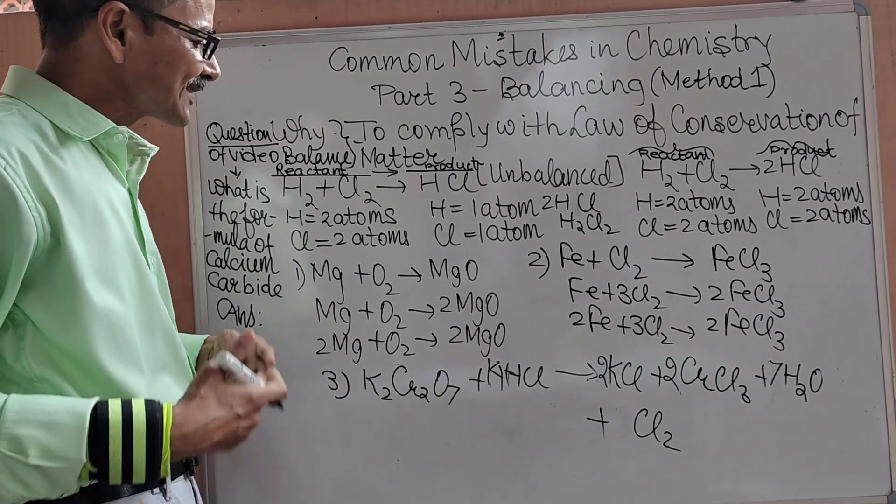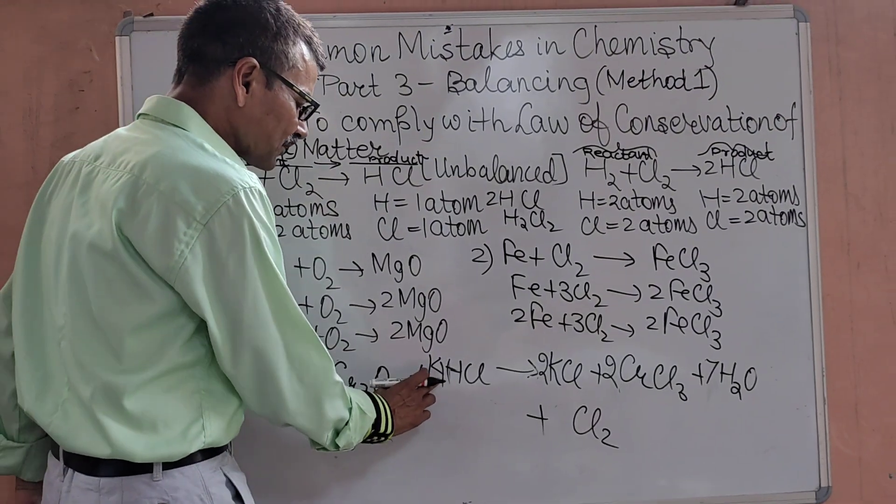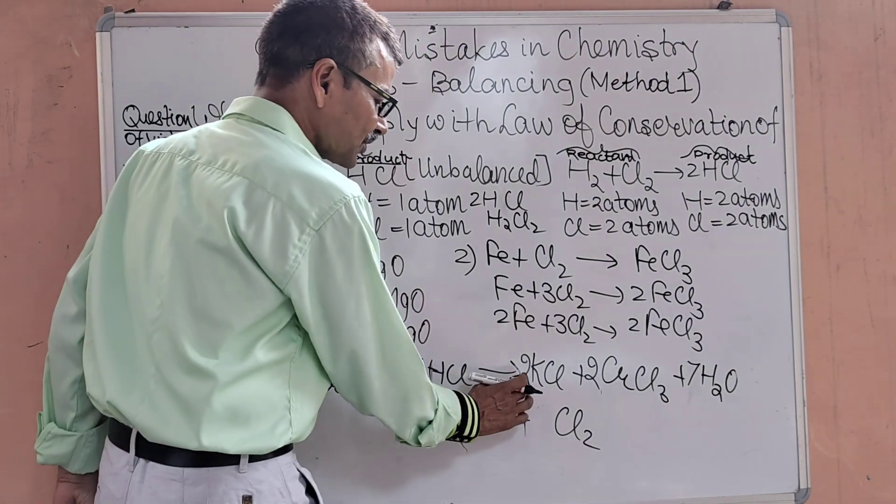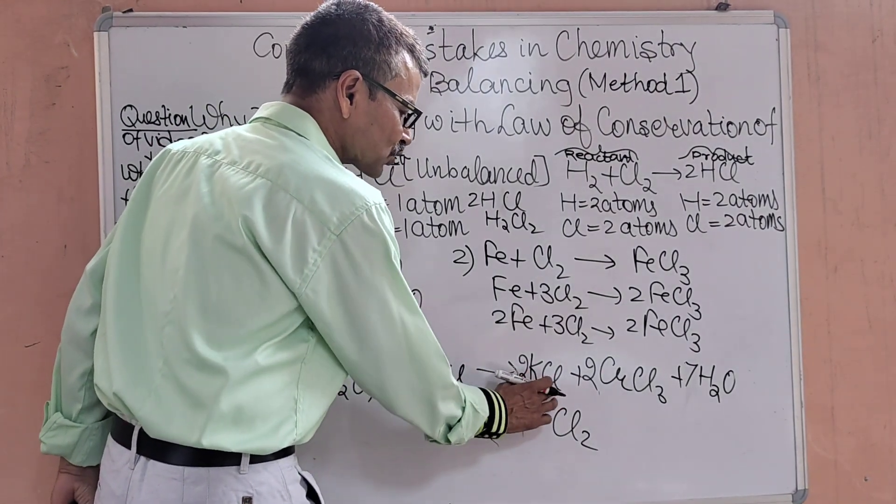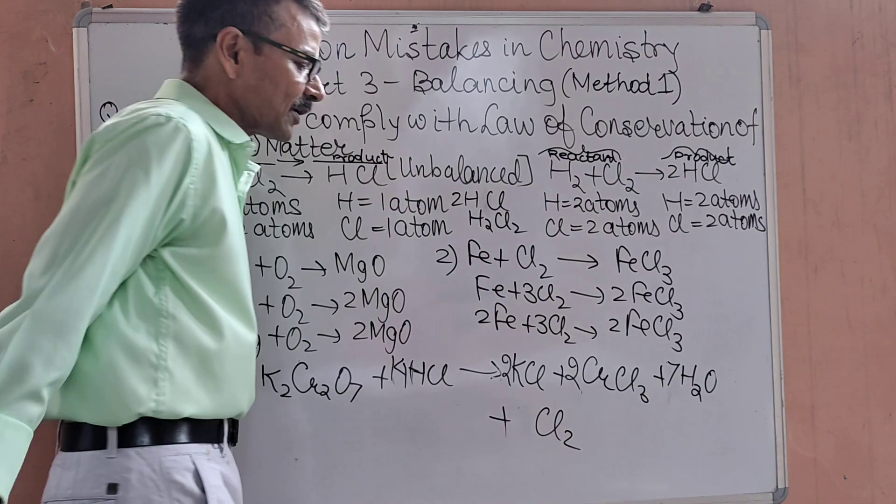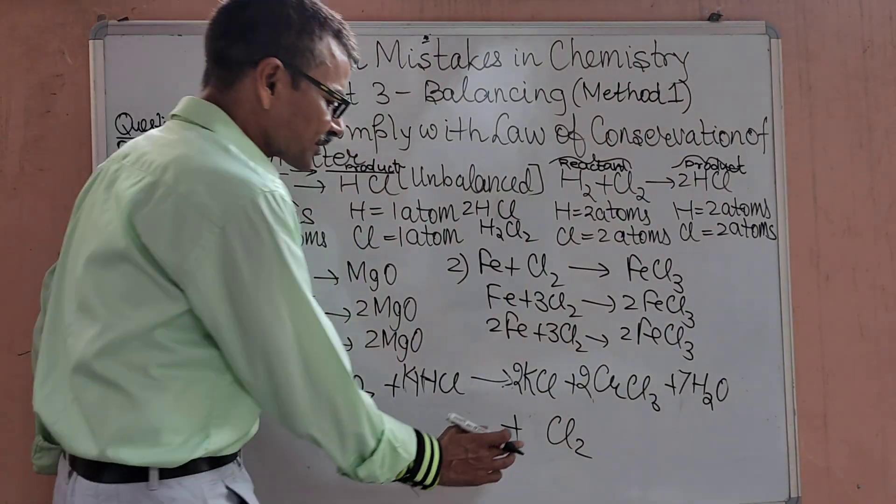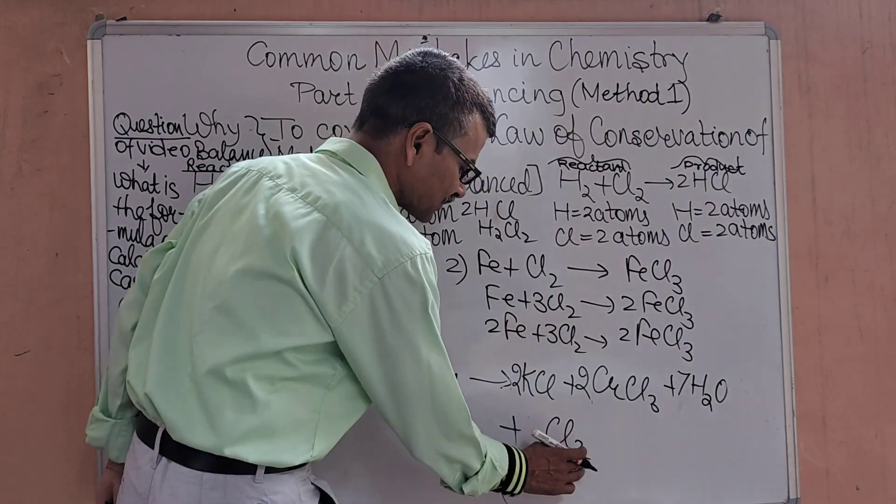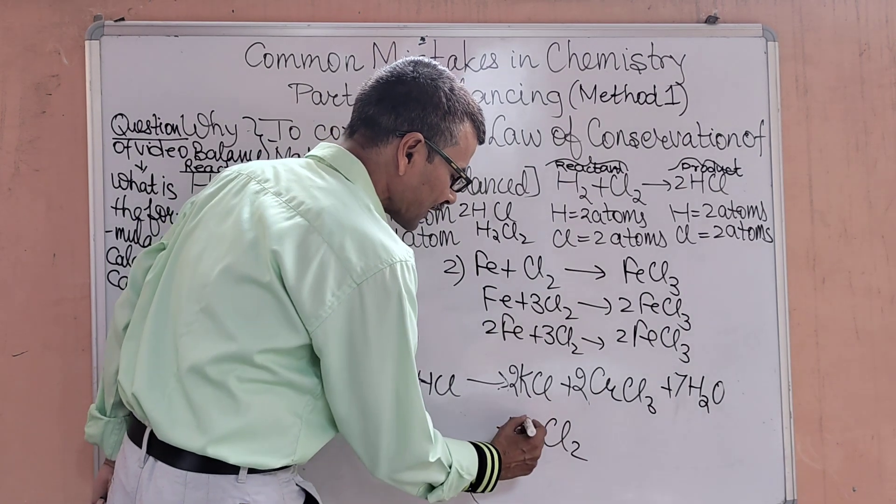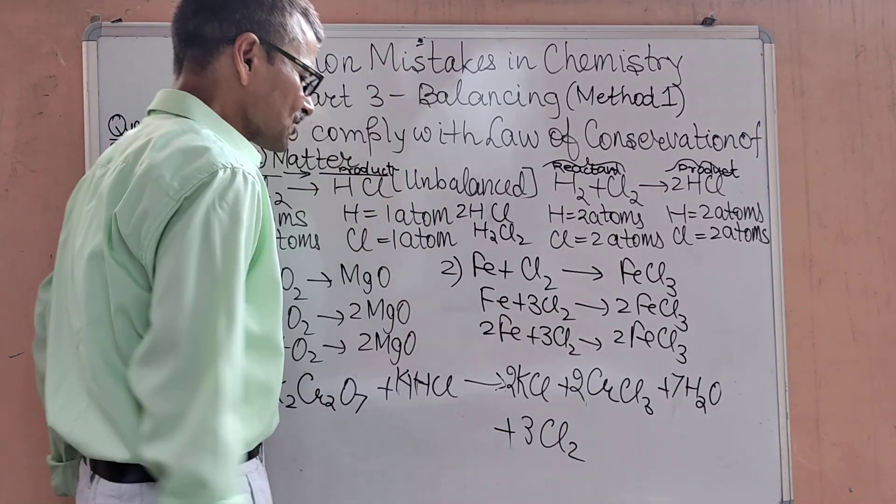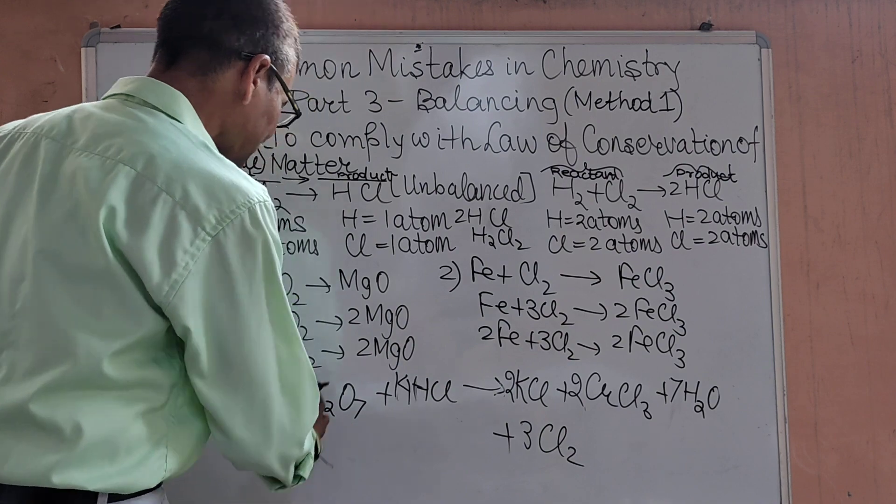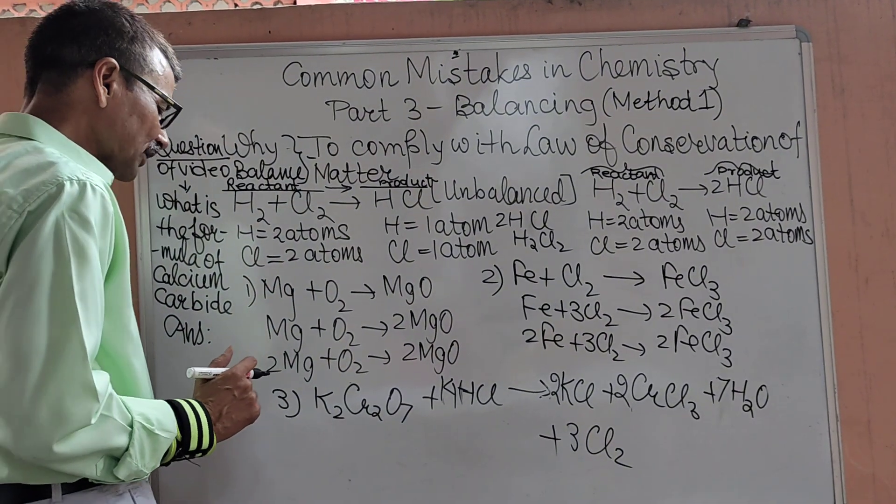Now the last calculation is for the chlorine. Chlorine, 14 atoms here. Here in the reactant side 2 plus 6, 8. We require 6 more. Here the chlorine molecule is there which means 2 atoms of chlorine. If you multiply this by 3, 3×2=6. So here also 14 Chlorine, here also 14 Chlorine.